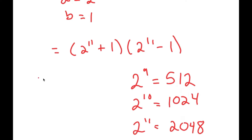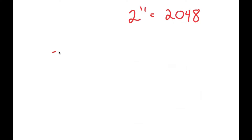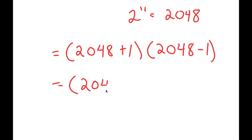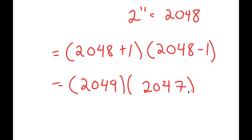So now I get 2048 plus 1, times 2048 minus 1. Now, 2048 plus 1 is 2049, and 2048 minus 1 is 2047. So I get 2049 times 2047.